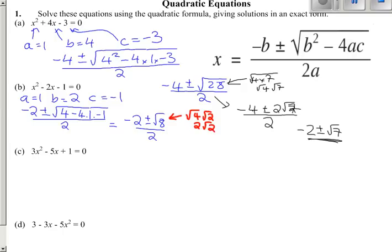So we've got minus 2 plus or minus 2 root 2 over 2, let's cancel all of these 2's, we get minus 1 plus or minus root 2 as our final answer.